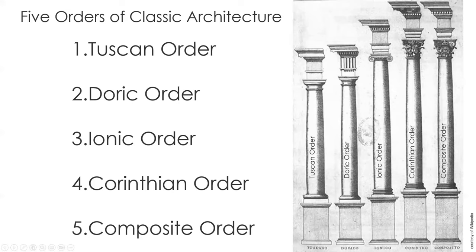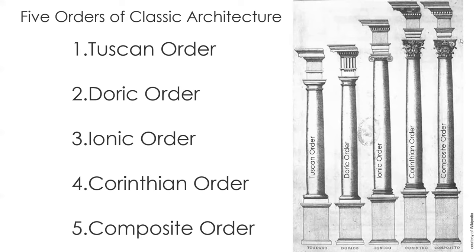The Ionic order also has a little more ornament in the entablature above. The Corinthian order is characterized by this leaf-like capital, so it's very easy to recognize from all the others. Then there is also a composite order, which is essentially a composite of the Ionic and Corinthian. As you can see in the capital of the composite, it's a Corinthian capital plus an Ionic capital, so it has the horn-like ornament at the top.